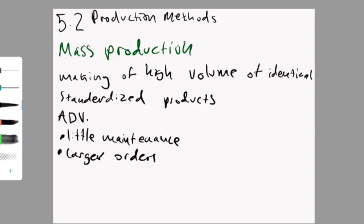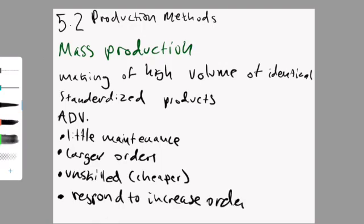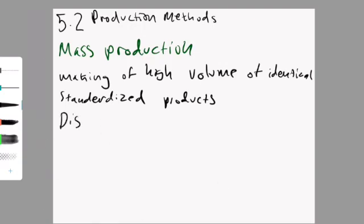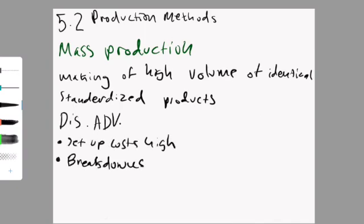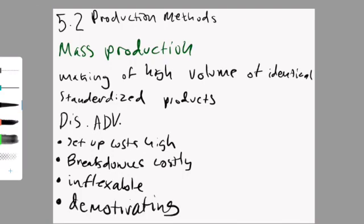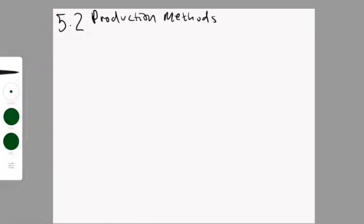Advantages: there is little maintenance, you don't need a lot of workers and you can also have unskilled workers because all they really have to do is press a button or two. And you can also make large orders. The main disadvantages are that it is very expensive to set up because you have to buy all the machinery. It is also very inflexible and costly if the machines break down. And it is demotivating for the employees because they don't have anything specific to do.